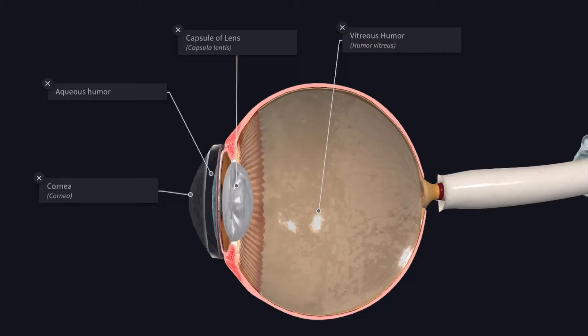In this video, we will study about the refractive media of the eye. The refractive apparatus of the eye consists of cornea, the aqueous humor, the lens and the vitreous humor.